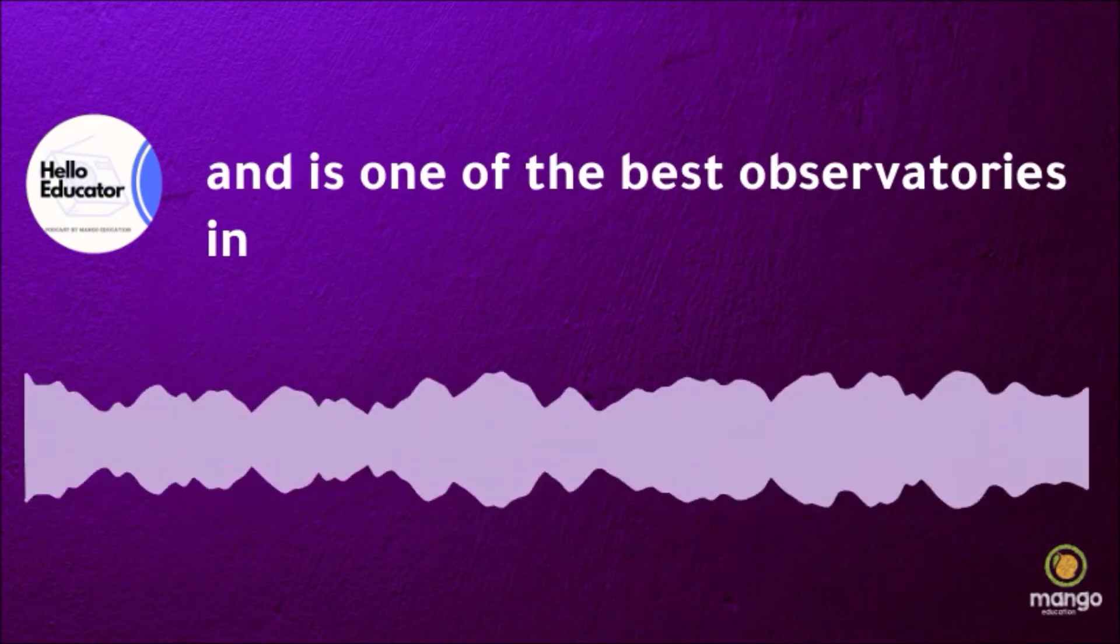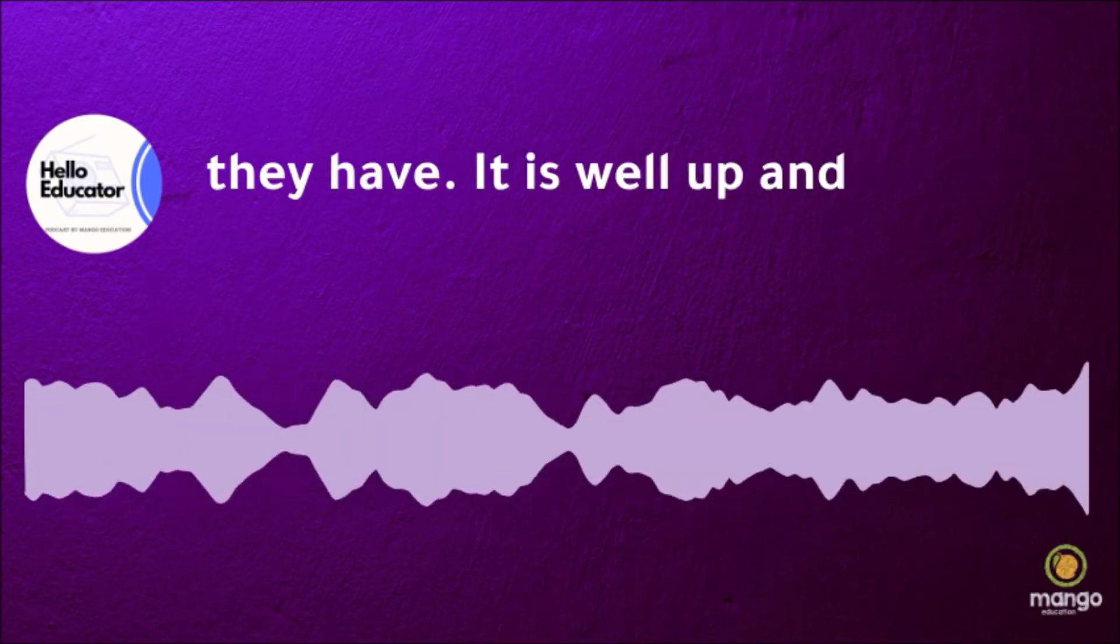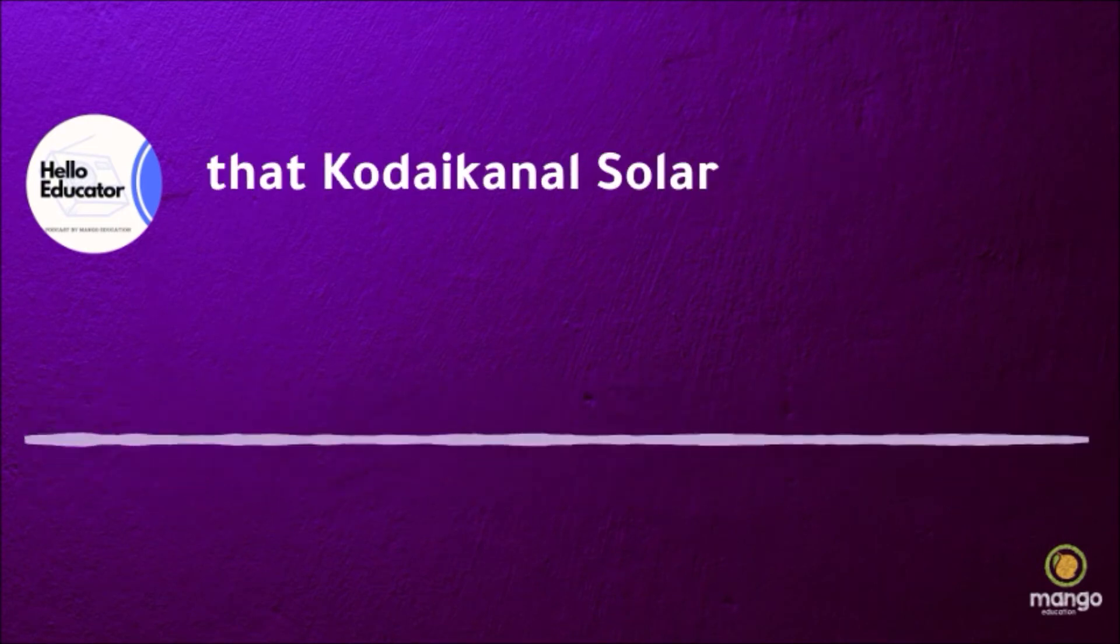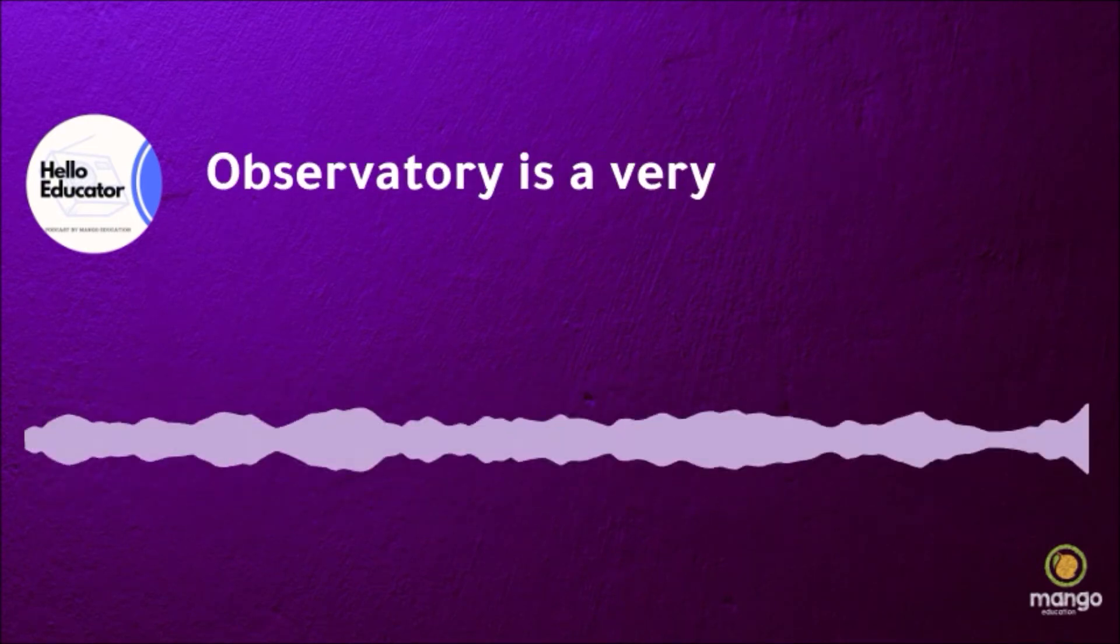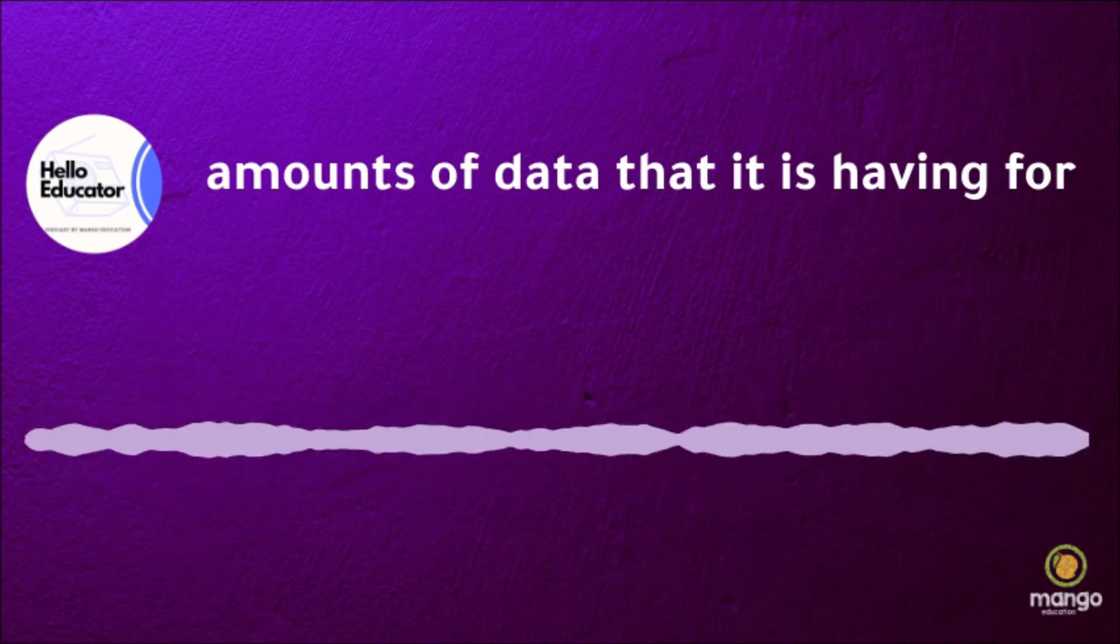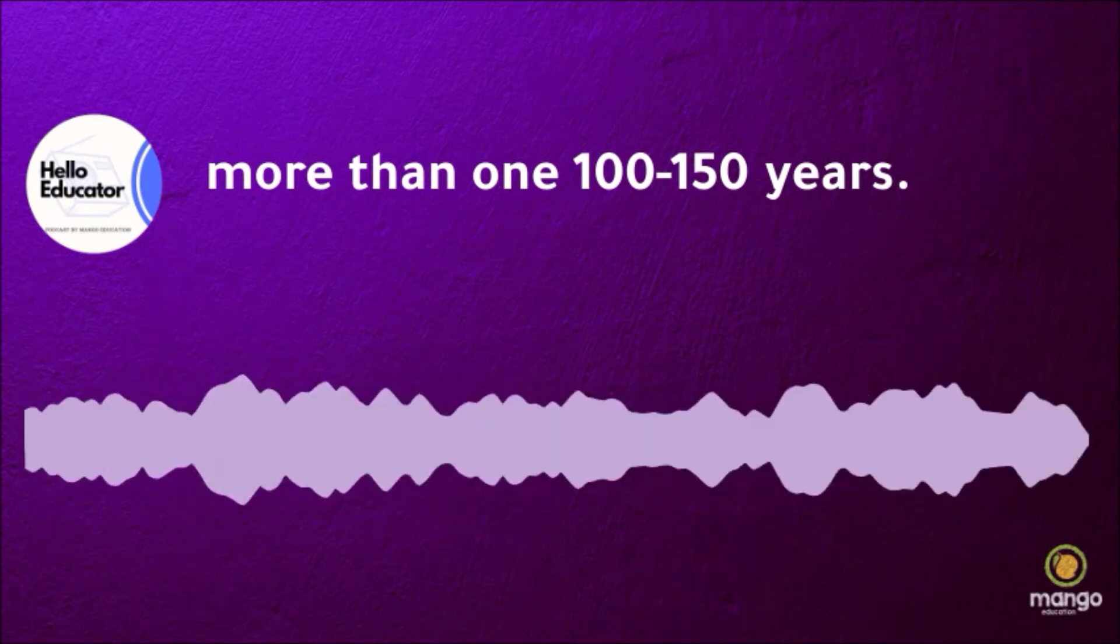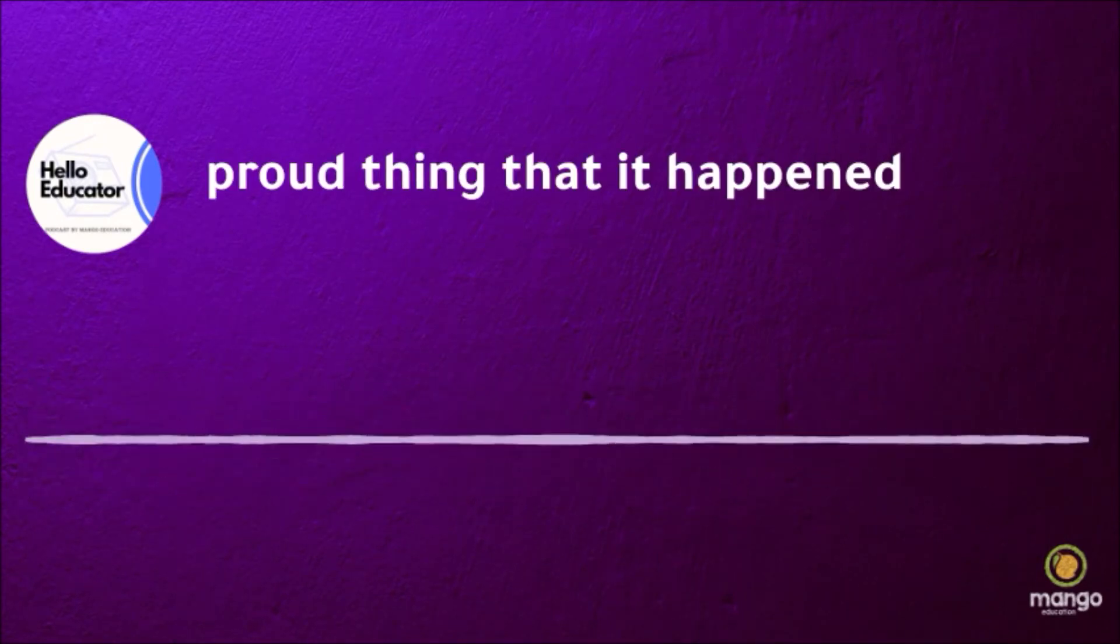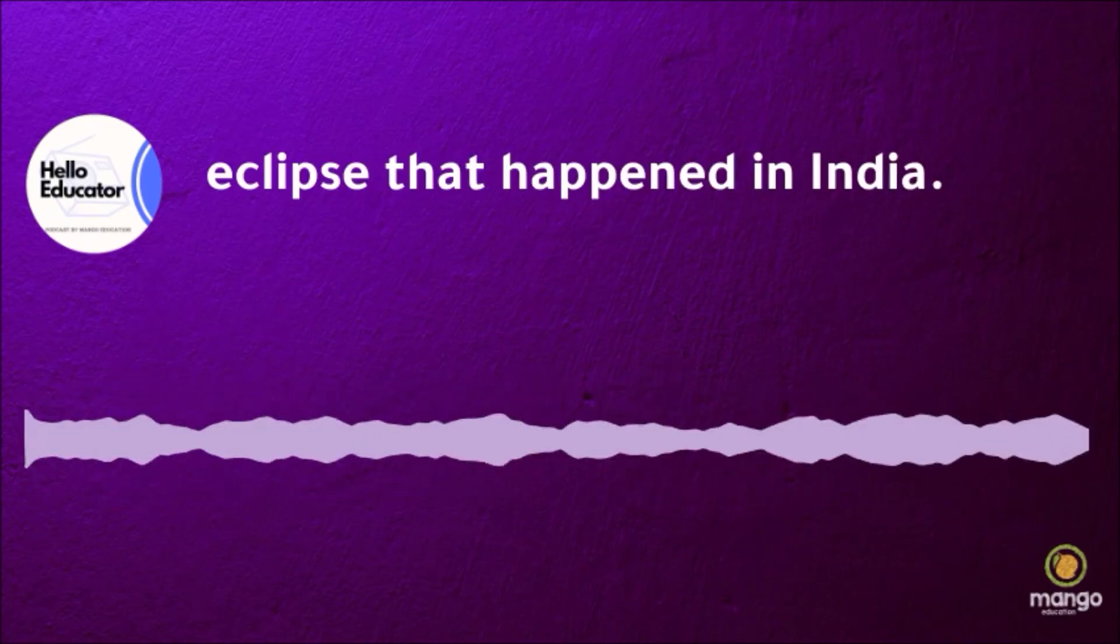It's one of the best observatories in the country and is well up and running. Those of you who have been to Kodaikanal know that Kodaikanal Solar Observatory is a very popular place and it's known for its huge amounts of data for more than 100 to 150 years. So it's a very proud thing that it happened under the eclipse that happened in India.